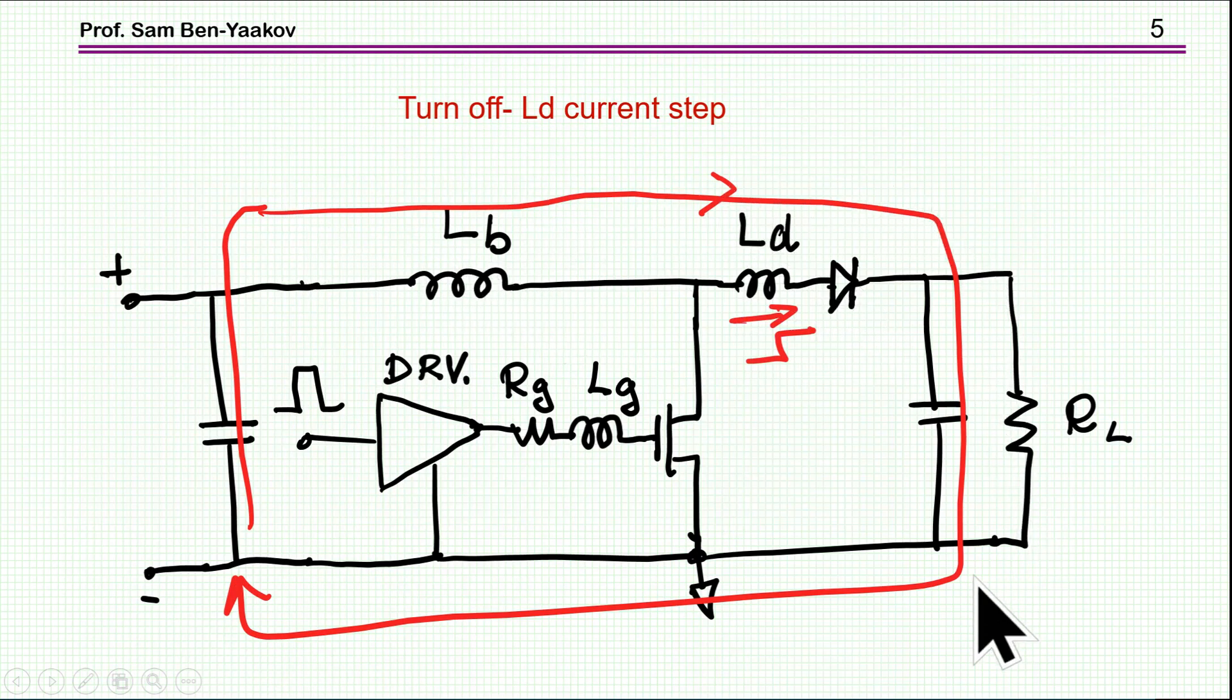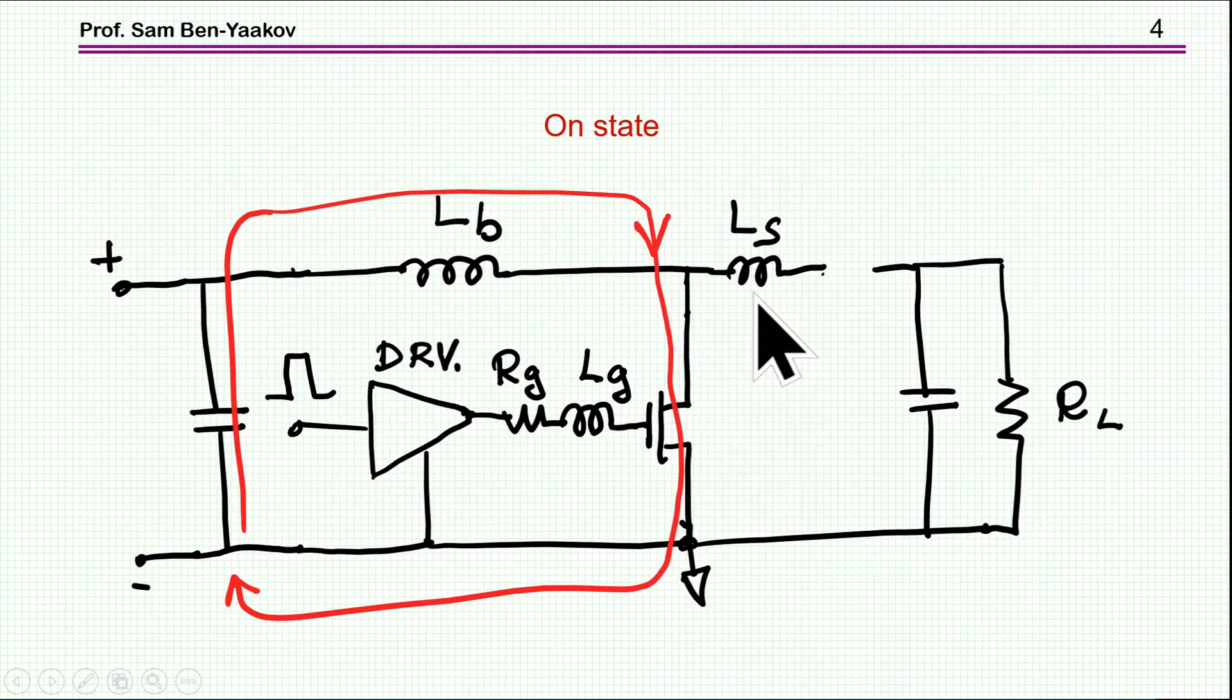So this will be now the loop here of the current. Now, in this case, we're going to have a step current at the inductor, in this stray inductor, because before that there is no current, no connection. I've taken off the diode just to indicate that it's not conducting.